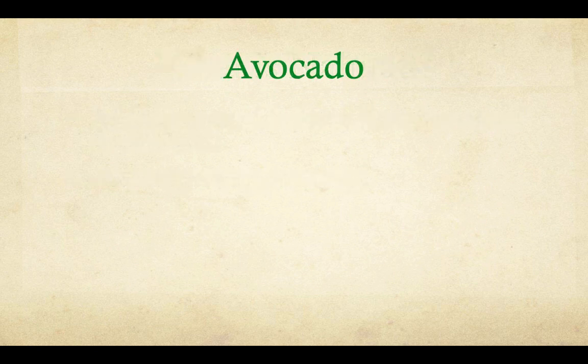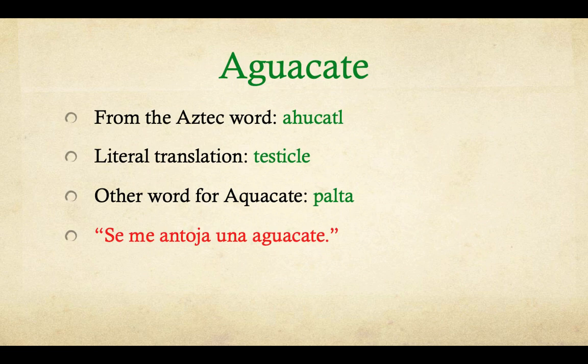All right, avocado. Do you know what the popular word for avocado is in Mexico? It is 'aguacate.' It comes from the Aztec word 'aguacate.' My pronunciation for Nahuatl is not very good — I don't really know any Nahuatl, so bear with me. We're focused on Spanish and the Spanish translation. The literal translation of aguacate is actually 'testicle,' and I don't really need to explain why — if you've seen an avocado, that can explain itself.